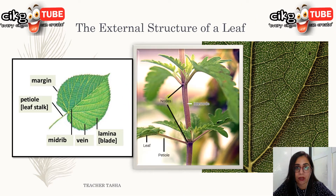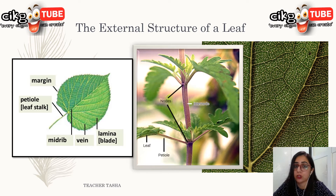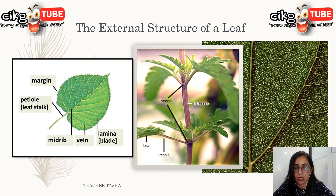A leaf is the main organ of a plant, which carries out photosynthesis. The structure of a leaf can be divided into two parts: the external structure and the internal structure. Let's look at the external structure first.